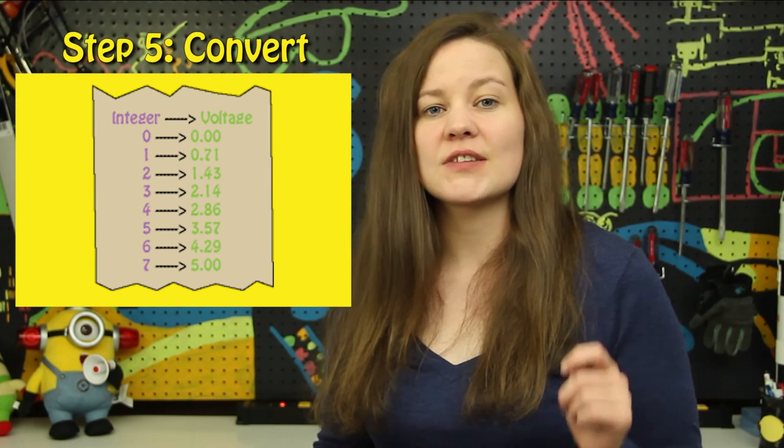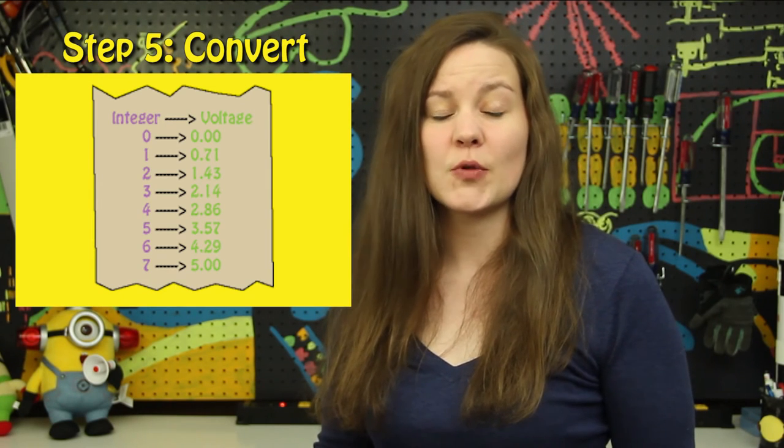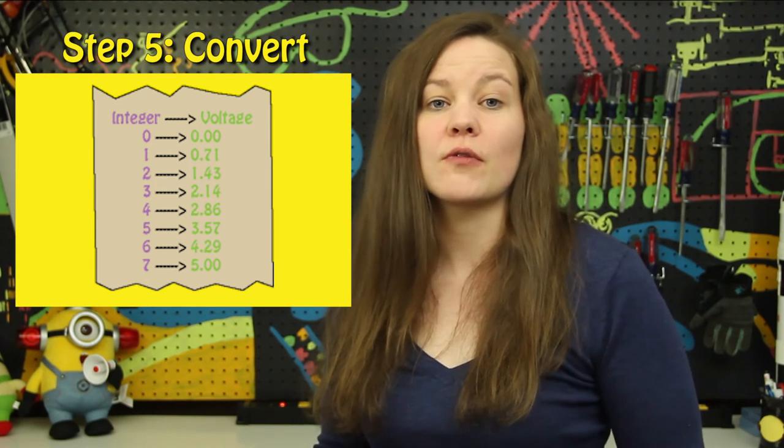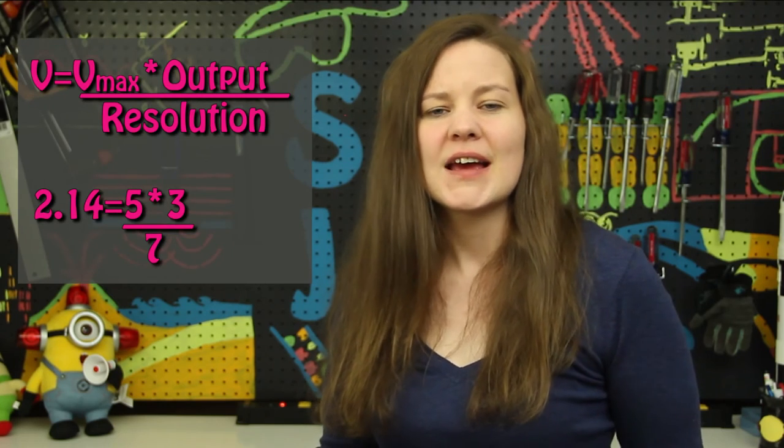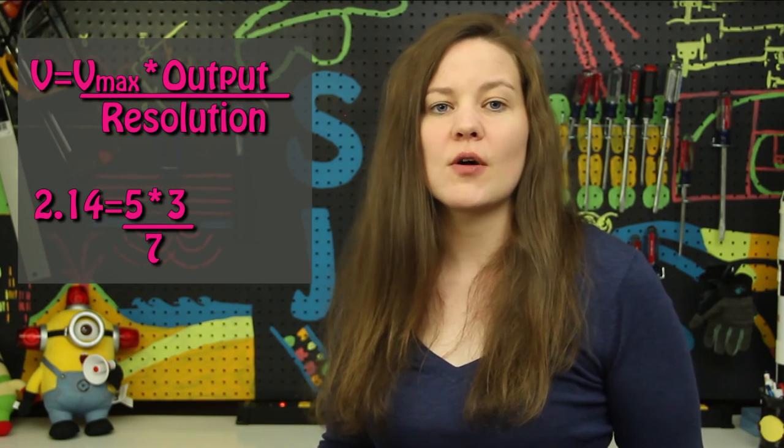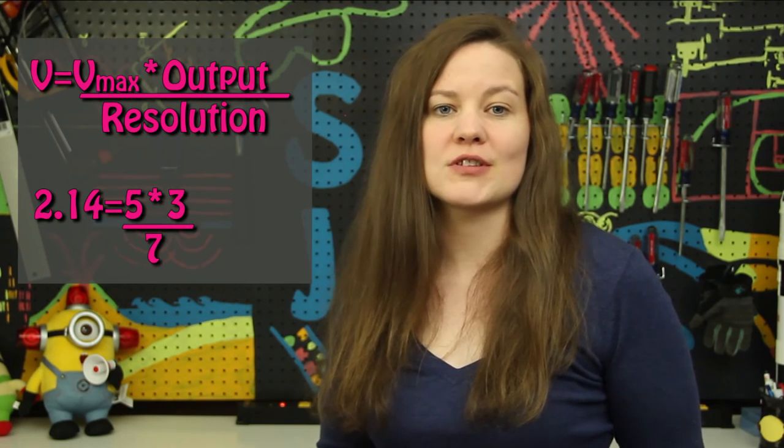Step five is converting that decimal number back into a voltage. We already know how to get the associated voltage value from our table, but we can also use the equation: V equals V-max times output divided by bit resolution.